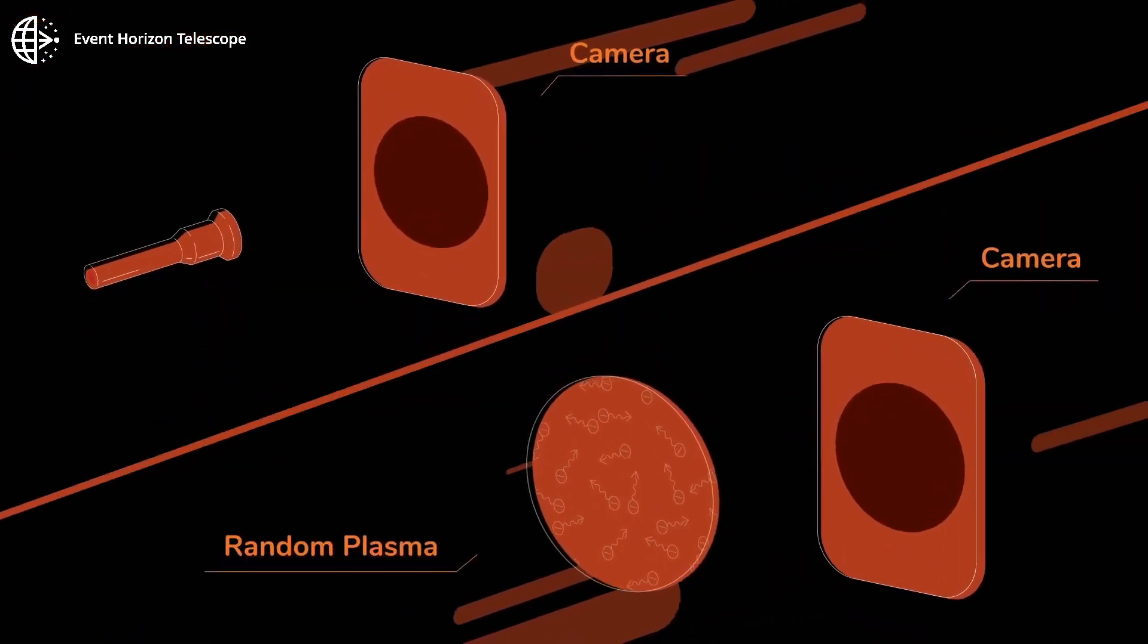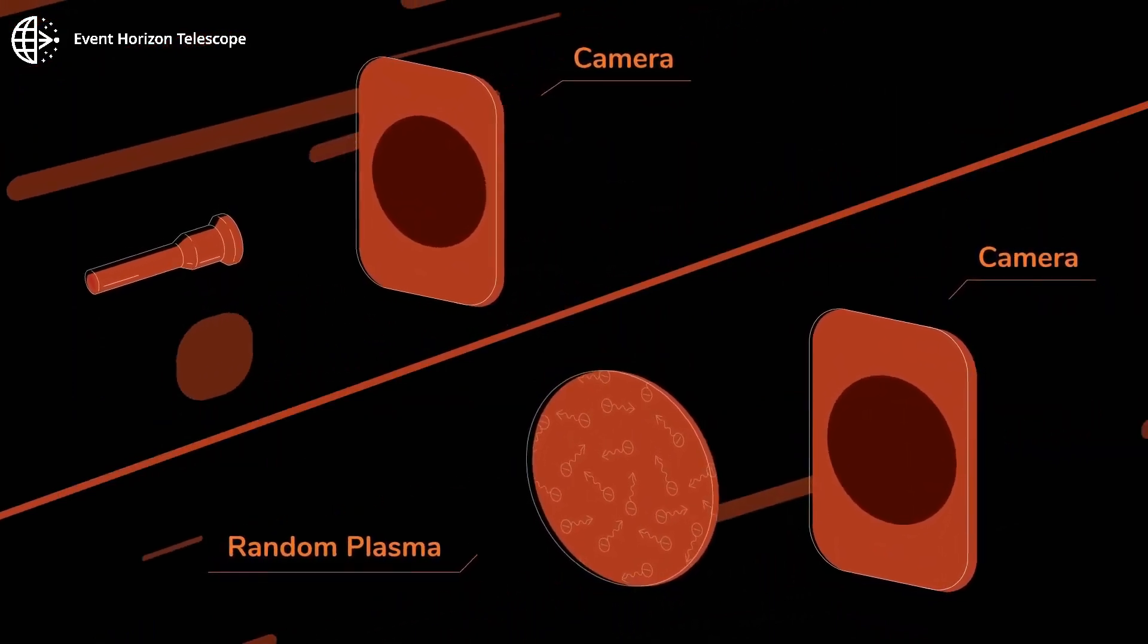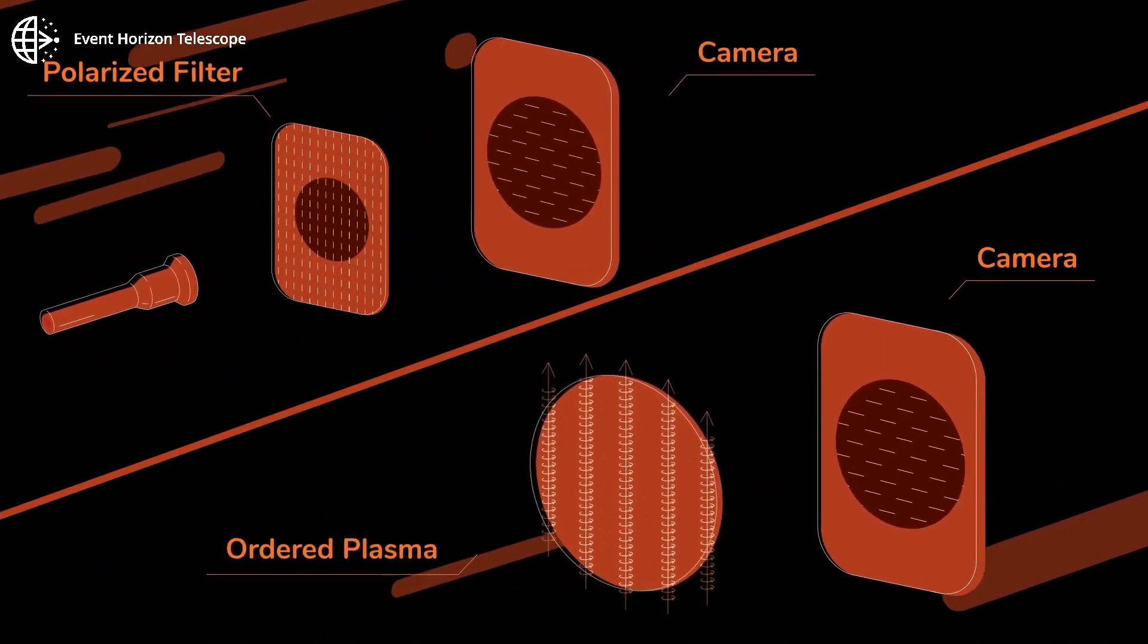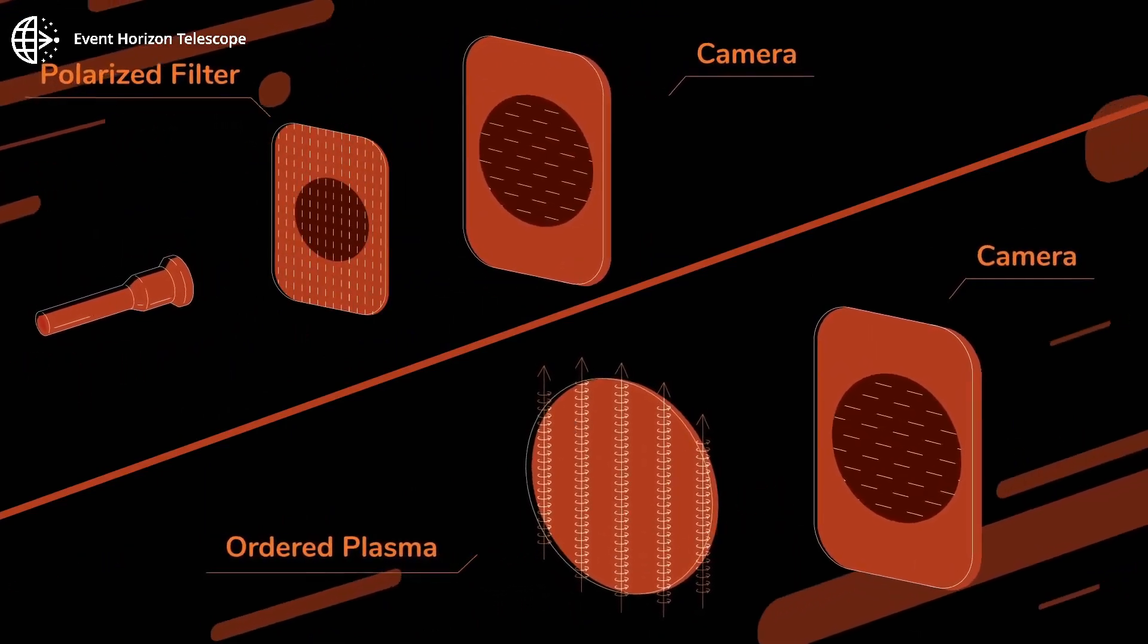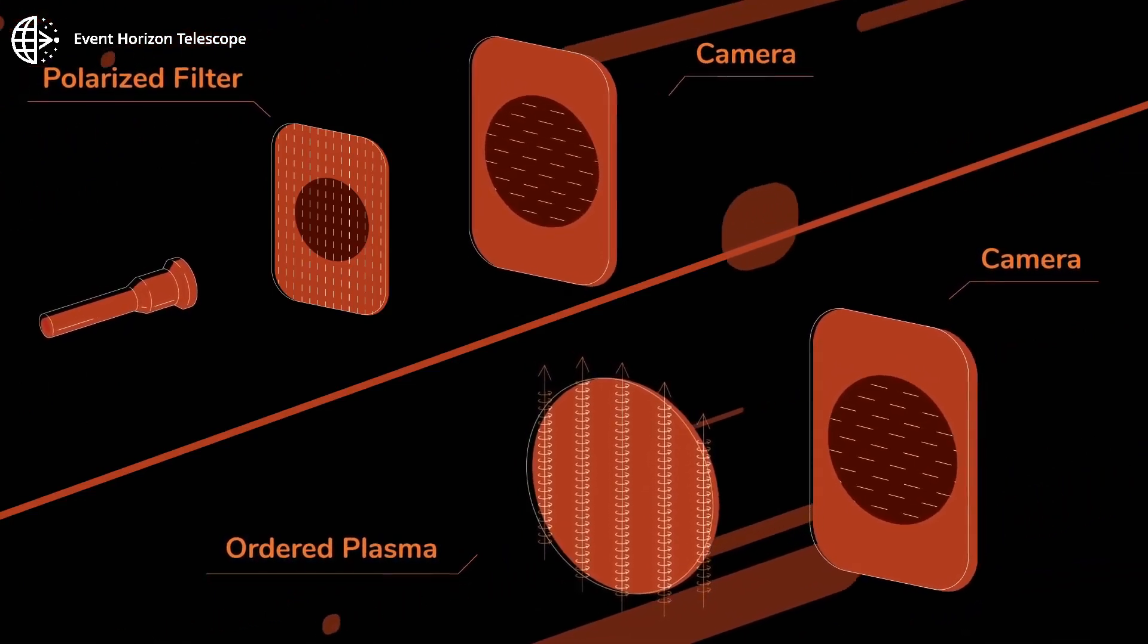In space, randomly moving hot gas or plasma emits unpolarized light, like the torch. Plasma threaded by a magnetic field is ordered and the emitted light is polarized. The magnetic field acts as a polarized filter.